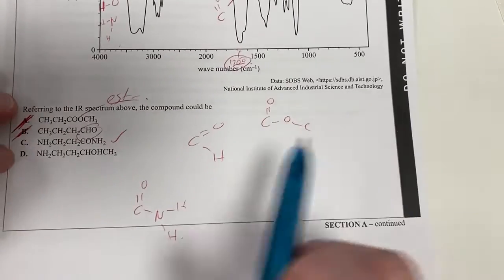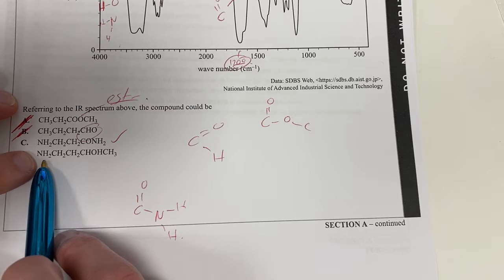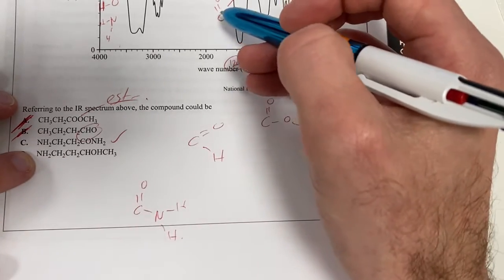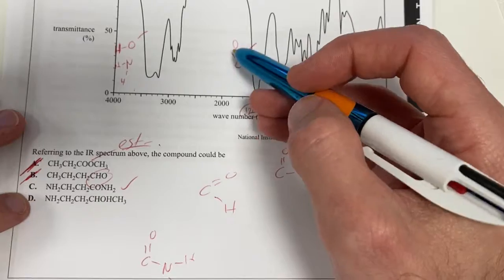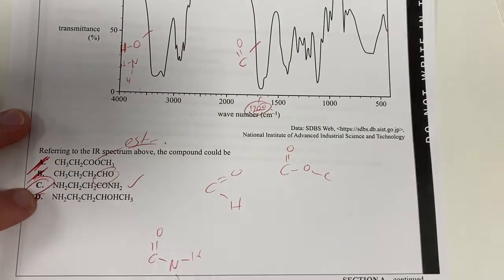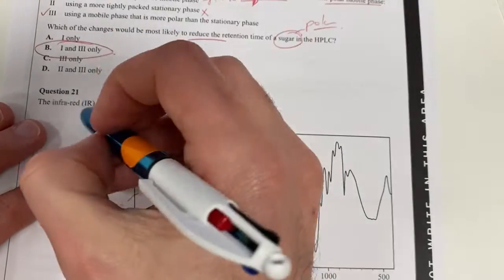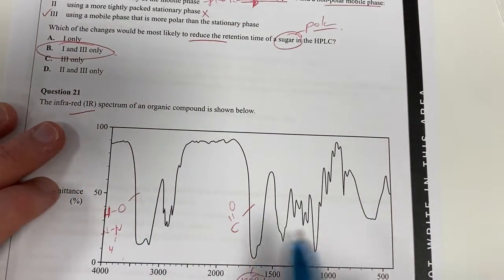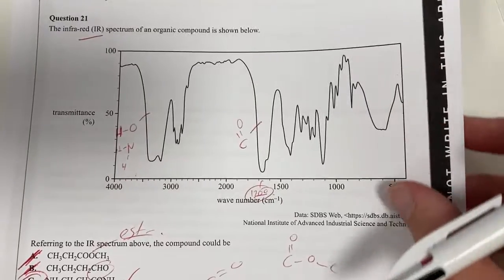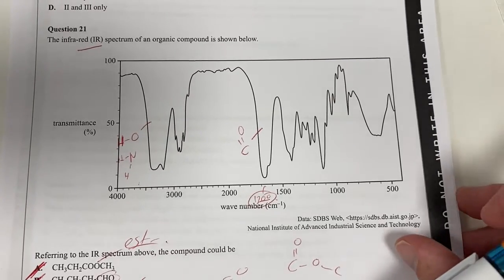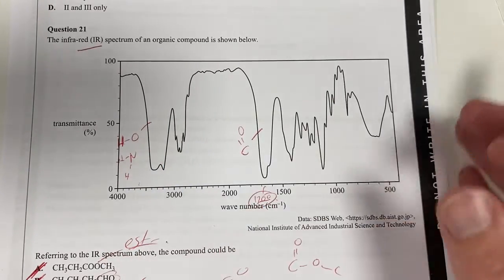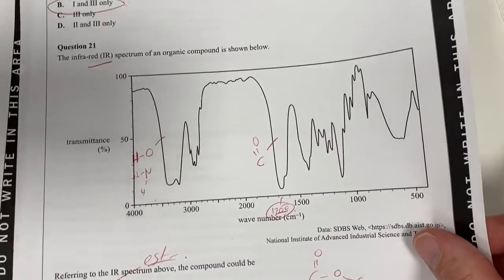The last molecule has an NH₂ and an OH, which means it doesn't have the C=O. So it's not going to be that one. The answer is going to be C. As soon as you see infrared, you should start annotating what peaks could be present, and you should have good familiarity with the general shapes for various peaks in IR spectroscopy.